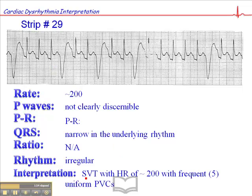The interpretation is supraventricular tachycardia — that's what this is — with a rate of approximately 200, with frequent uniform premature ventricular complexes. You'll notice that the QRS morphology is consistent: this one is the same as this one, same as that, same as this. We only have five PVCs in this rhythm, but you would want to report and document the number of PVCs per minute.